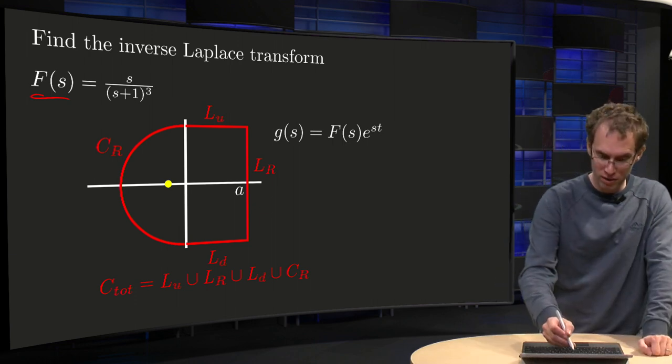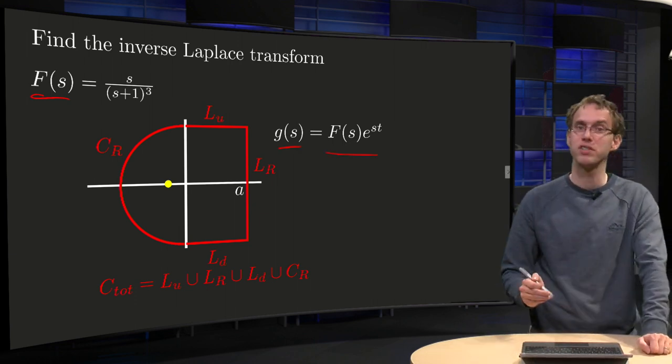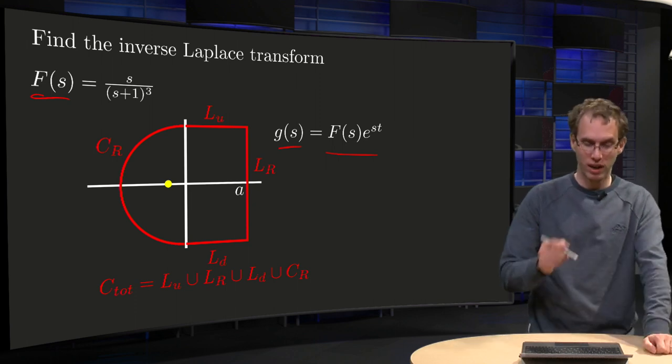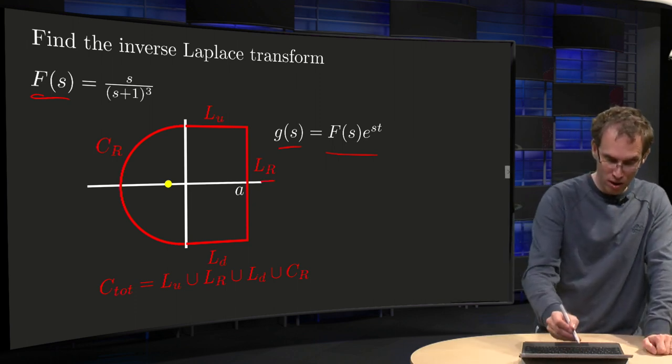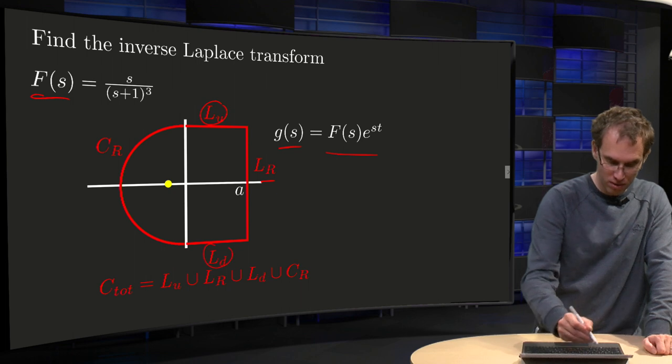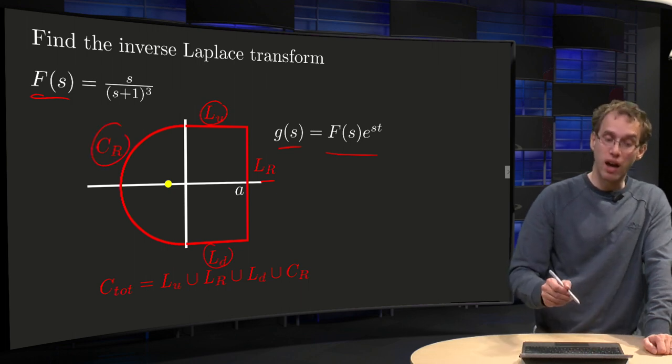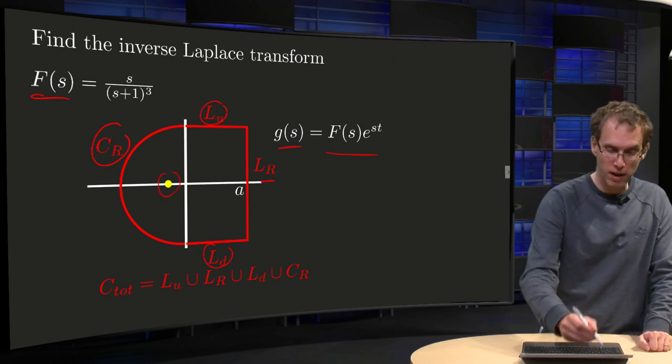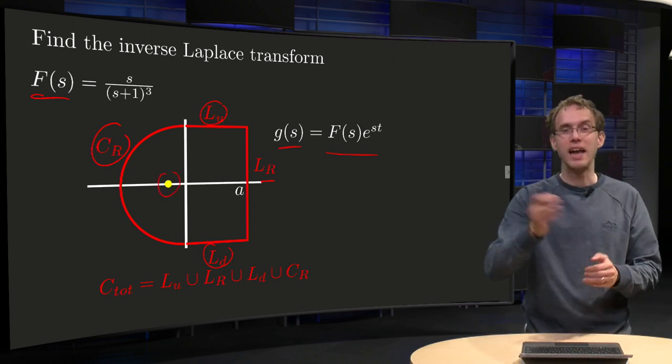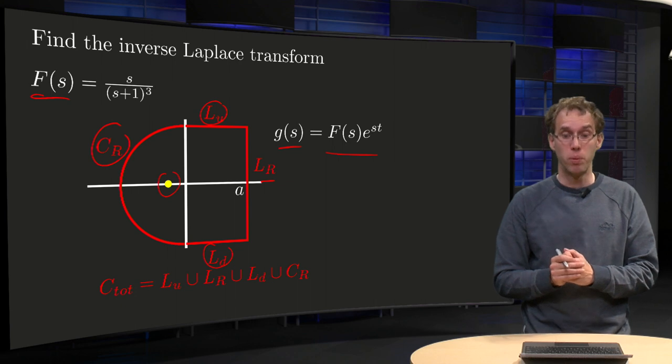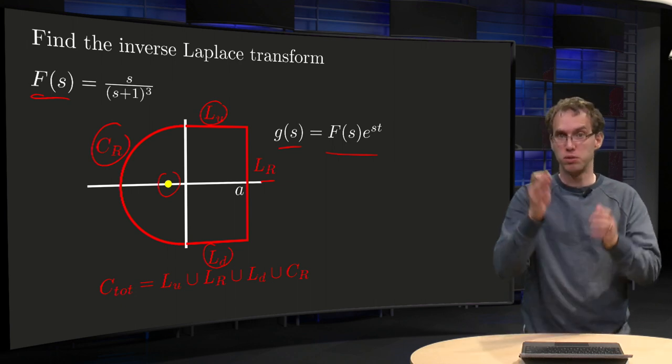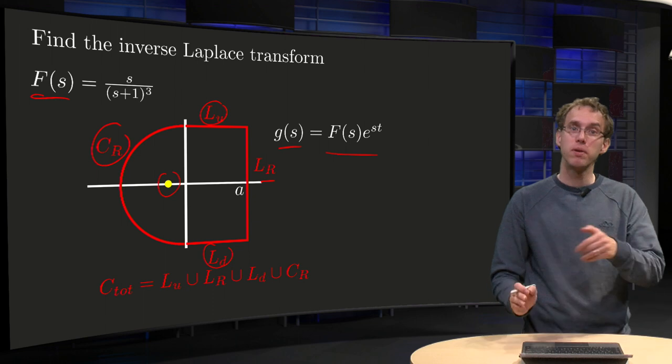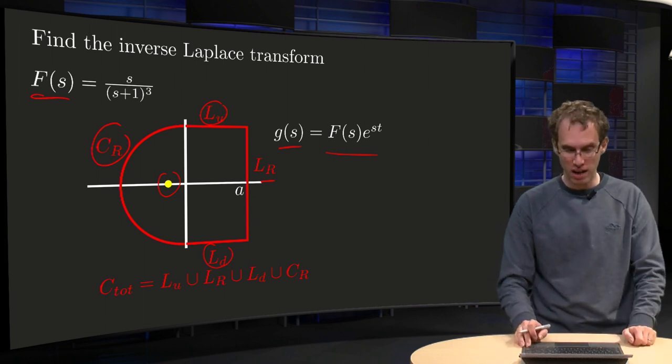Define our G of S as the product of capital F of S times e to the power ST, and take the contour as usual, LR joins L up joins L down joins CR, and we see that you have only one singularity at S equals minus one, so any positive A will do the job here, so we just put an A here, any positive A will do the job, because singularities have to be to the left.